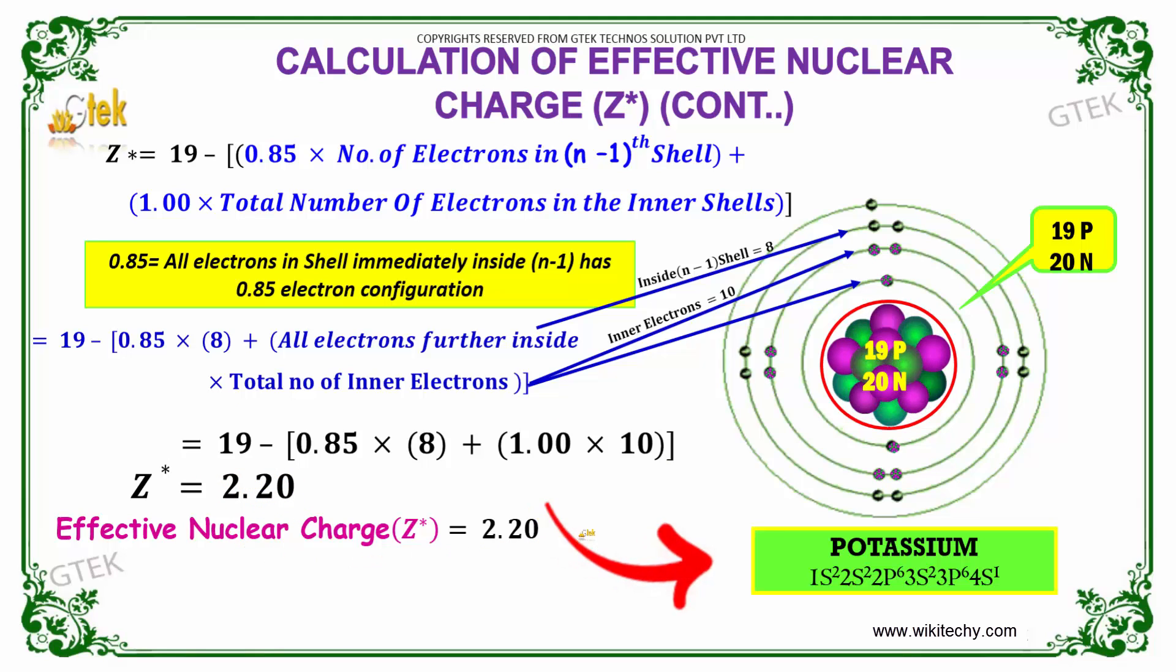This is referred to as the effective nuclear charge of the potassium element.